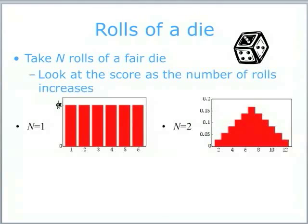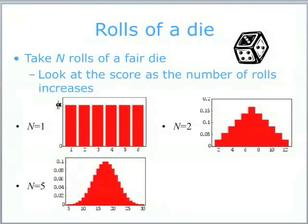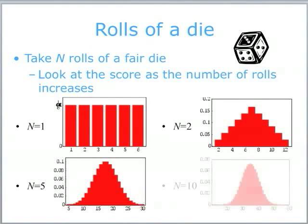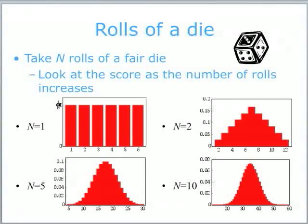Do it again — in fact, do it five more times. What you get then is the highest score being five times six, thirty, and the lowest score is going to be five. Our triangular shape has evolved into something a bit more bell-shaped. The most likely score is seventeen or eighteen. Do it ten times again, and you can see that this shape has become more embedded.